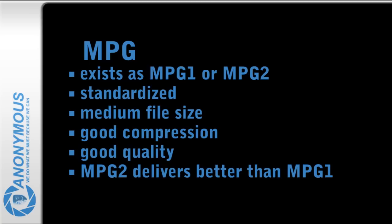First, we will look at the major container types or file formats. MPG has two versions: MPG1 and MPG2. It is a standardized format. It uses a medium file size and possesses good compression, which delivers good quality. MPG2 naturally delivers better quality than MPG1.